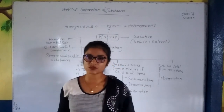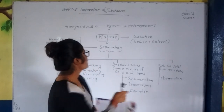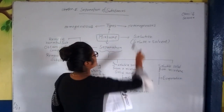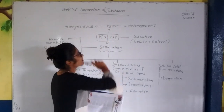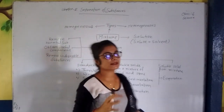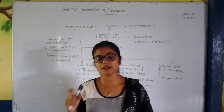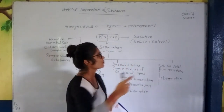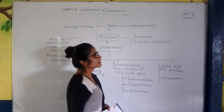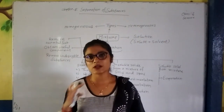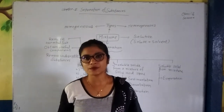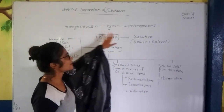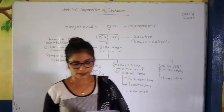There are two types of mixture: heterogeneous and homogeneous. Homogeneous means the substances of the mixture are equally and uniformly distributed. In heterogeneous mixtures, the substances are not equally or uniformly distributed. This is the difference between homogeneous and heterogeneous.